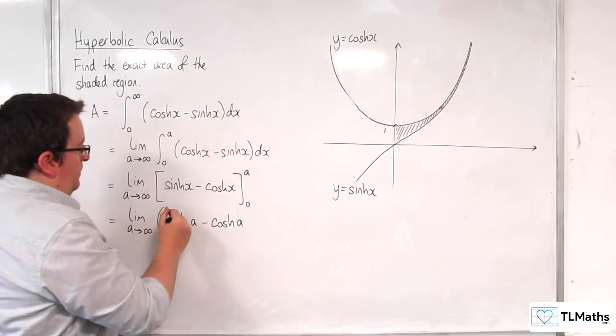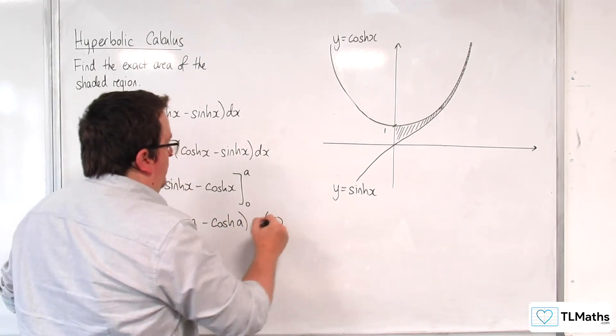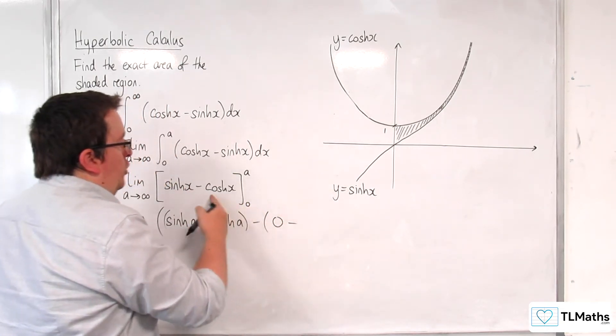And then substituting in 0, I get sinh of 0, which is 0, and take away cosh of 0, which is 1.